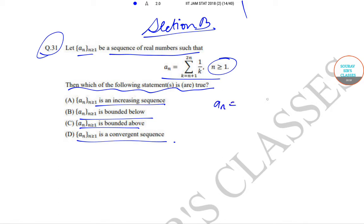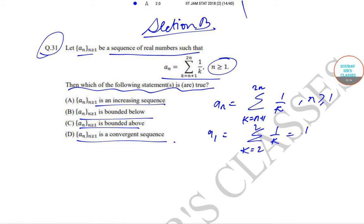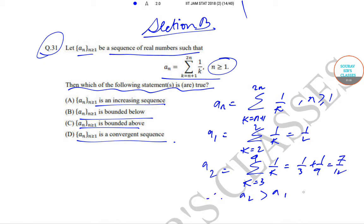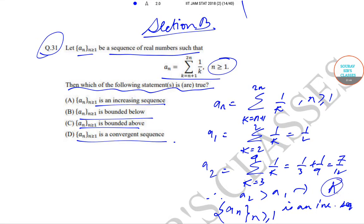We have a_n = Σ(1/k) from k = n+1 to 2n. So a_1 = Σ(1/k) from k=2 to 2, which equals 1/2. Then a_2 = Σ(1/k) from k=3 to 4, which is 1/3 + 1/4 = 7/12. Since a_2 > a_1, we can see that a_n is an increasing sequence. So option A is correct.